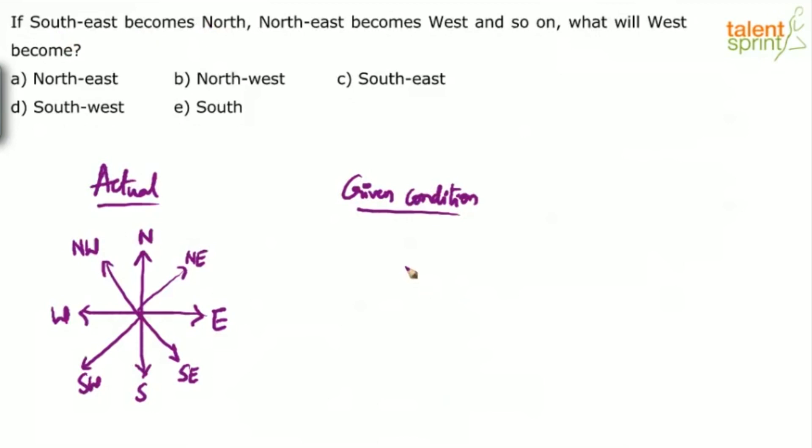Southeast becomes north. See, let us put all the four intercardinal directions. He says southeast becomes north. Now what is southeast? The one which comes between south and east, this one. Southeast becomes north. This is north.